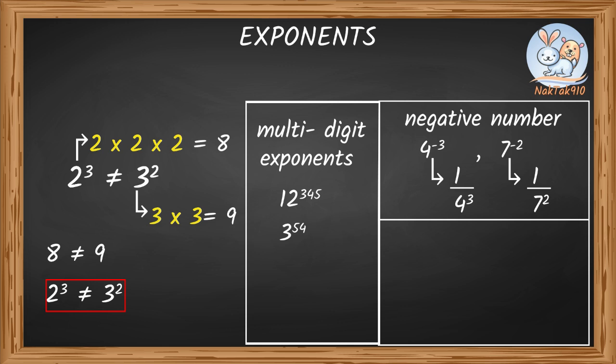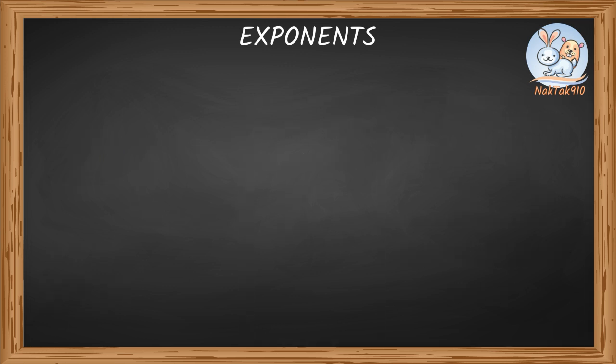We'll get into more details later. How about decimal exponents? Yes, we do that too! For example, 3 to the power of 2.5, or 4 to the power of 1.1. Now try to write these in exponential form and identify the base and exponent.